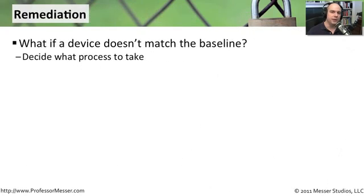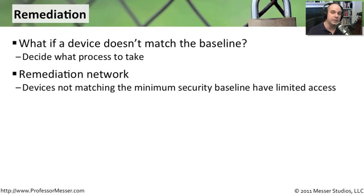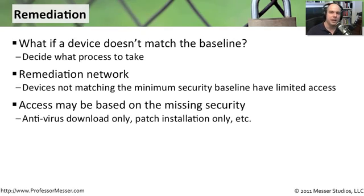If you've created these baselines and you're constantly monitoring them, and then you realize one of your systems does not match what you consider to be the baseline for the security of that system, you have to decide what process to take — generally called remediation. Maybe we're taking those systems and they only have access to a very special remediation network. So if your system plugs into the network and doesn't have the latest antivirus signatures, we make sure they can't access anything on the network. We put them in a special network automatically, and that network would only have access to download the latest antivirus patches, the latest operating system patches, but in a place where they cannot cause a problem.